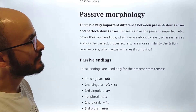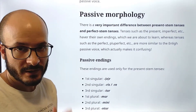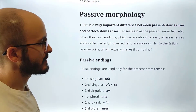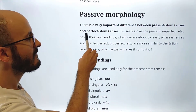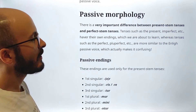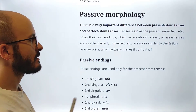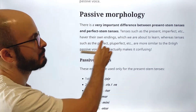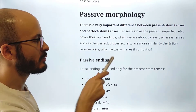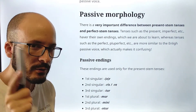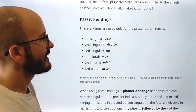There is a very important difference between present stem tenses and perfect stem tenses. Tenses such as the present, imperfect, etc. have their own endings, which we are about to learn. Whereas tenses such as the perfect, pluperfect, etc. — perfect stem tenses — are more similar to the English passive voice, which actually makes it confusing. We are going to see why. So first, we have to learn the passive endings.